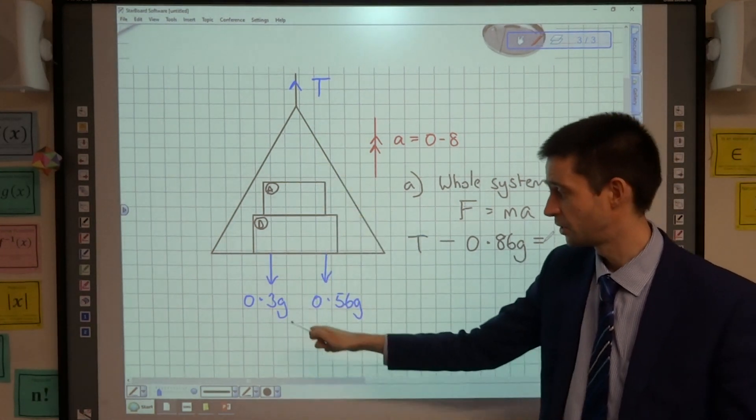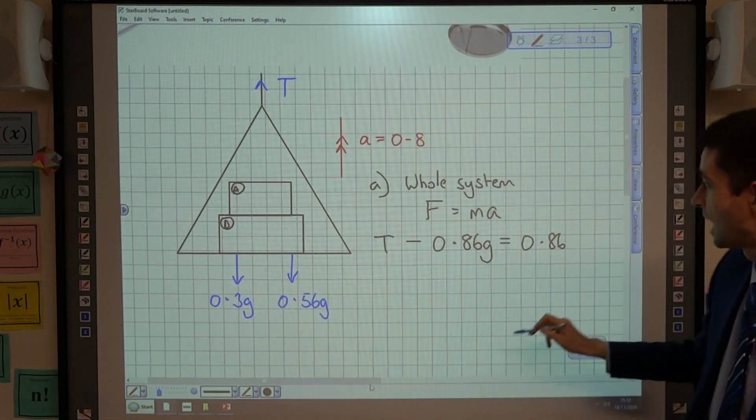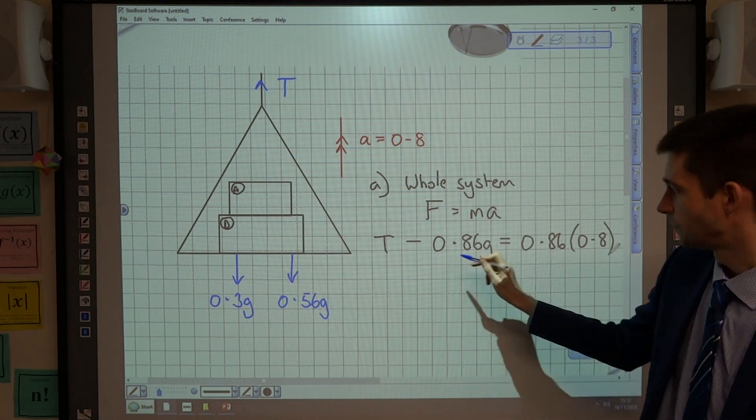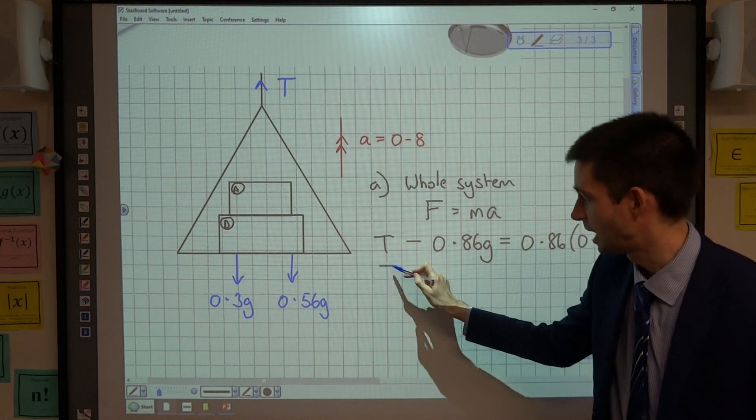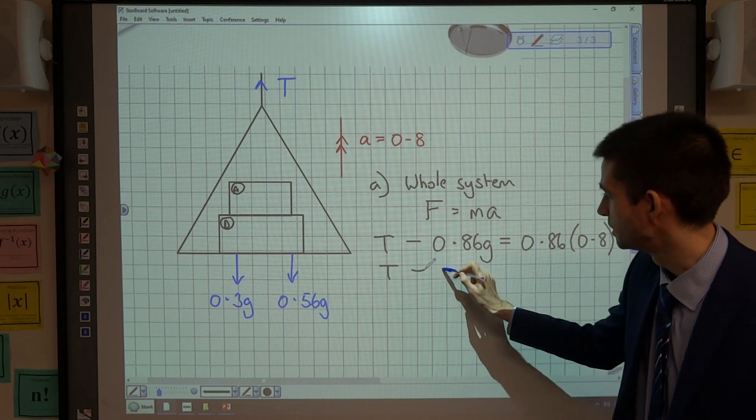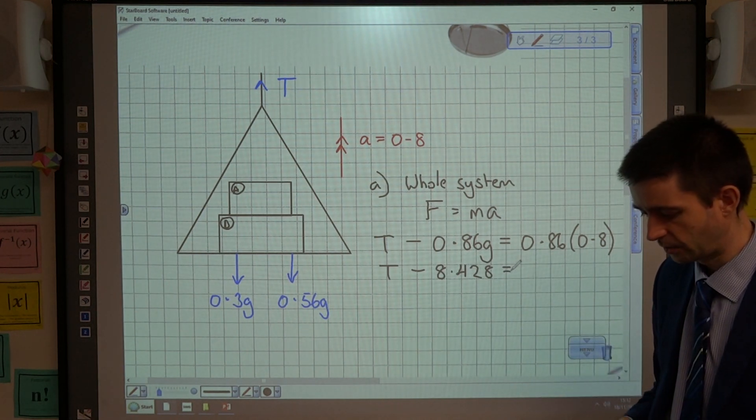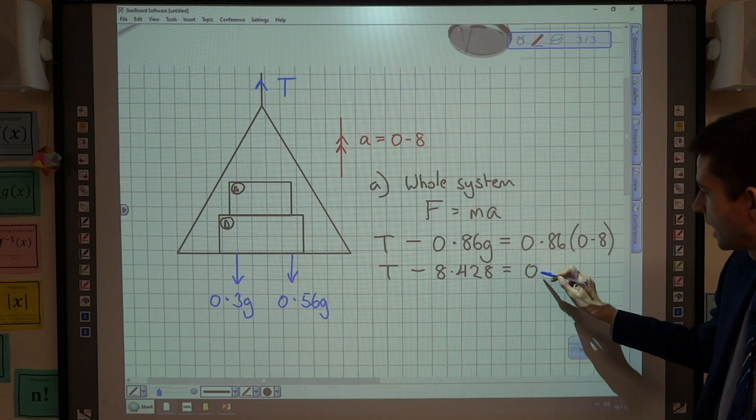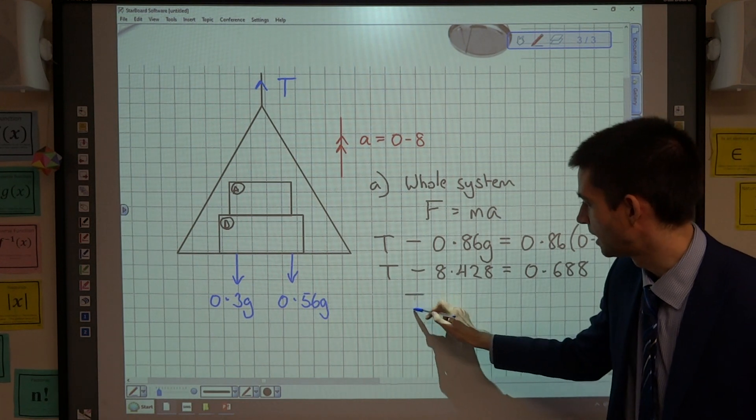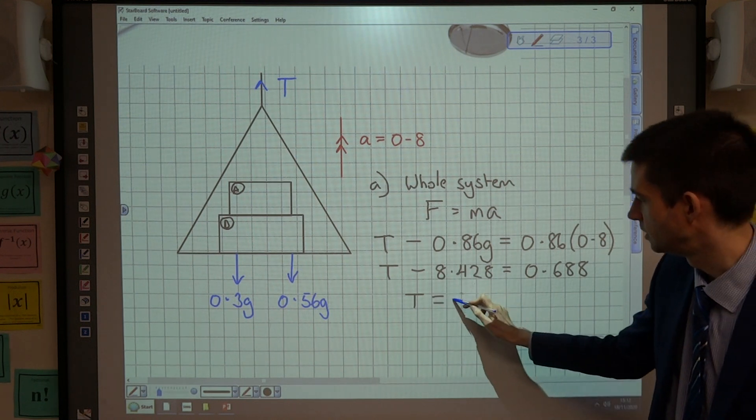And that is equal to the mass of the system, the total mass of the system, which is 0.86, multiplied by the acceleration, which is 0.8. So 0.86 times by 9.8, because 9.8 is the value that we use for G in mechanics, is 8.428. And 0.86 times by 0.8 is 0.688. And adding that 8.428, I get that the tension in my string is 9.116 newtons.